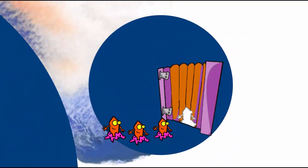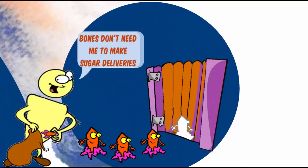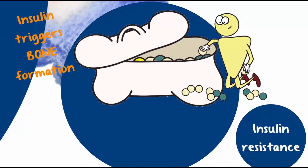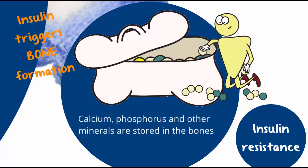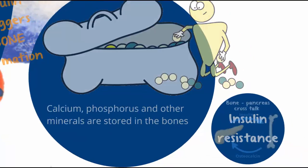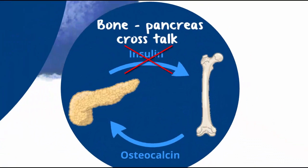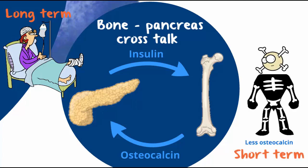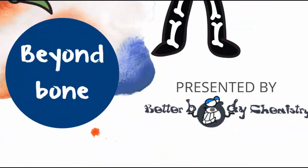Interestingly, bone doesn't need insulin to take up sugar, but bone still responds to insulin. Insulin is the hormonal signal that triggers bone building. One of the reasons for this is that insulin's job is to put away the groceries, and bone is a very useful cupboard — it stores calcium and phosphorus, among other things. So when you are insulin resistant, bone remodeling is not optimal because the bone is not getting the full signal. In the long term, this puts you at risk of bone breaks, and in the short term, leaves you with less osteocalcin in your circulation, which impacts your energy metabolism.